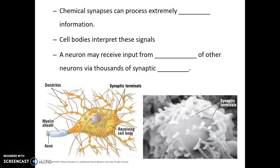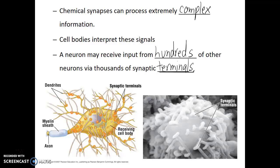Chemical synapses can process extremely complex information. The cell body — the main body of the neuron — interprets these signals. A single neuron may receive inputs from hundreds of other neurons via thousands of synaptic terminals. This is where the concept of threshold really comes into play: is this neuron receiving enough signals that it should generate its own action potential? These decisions occur within the cell body of the neuron.